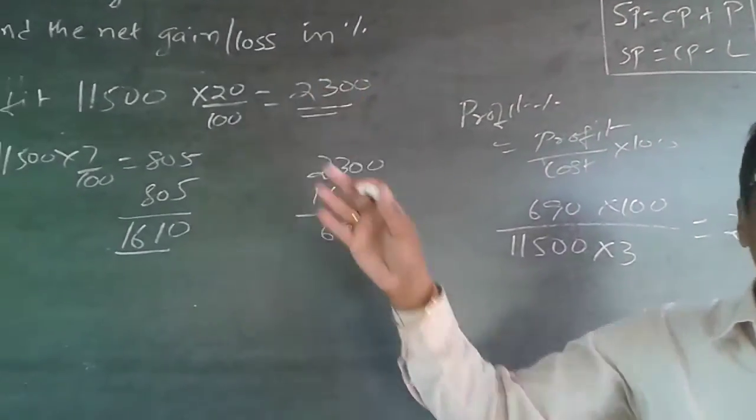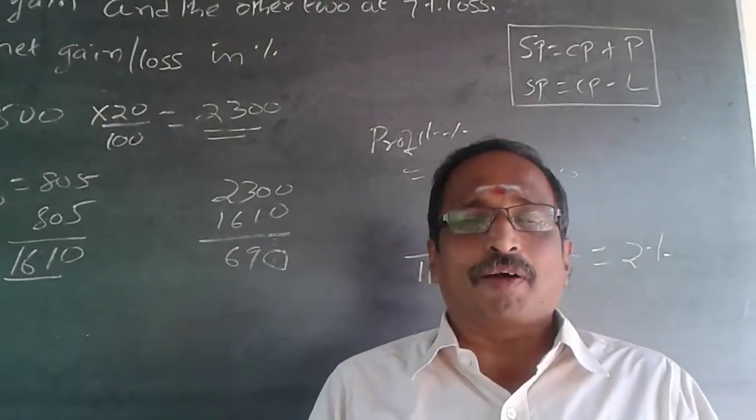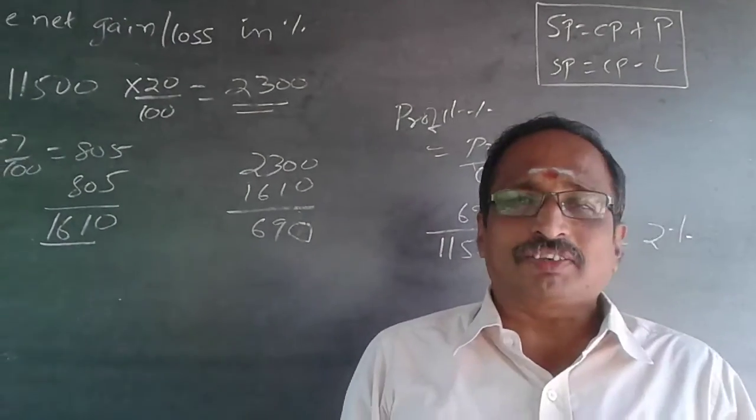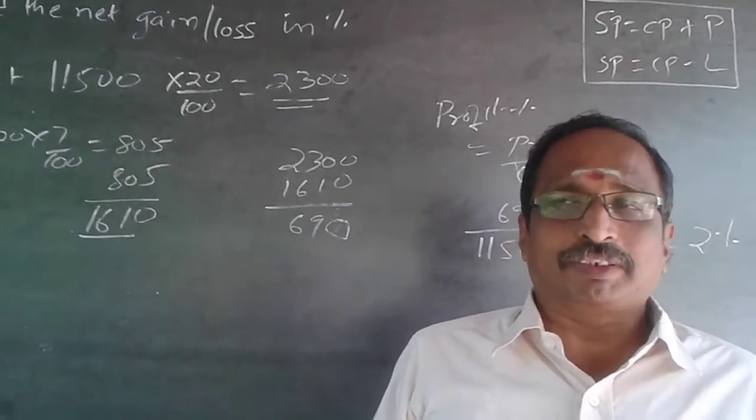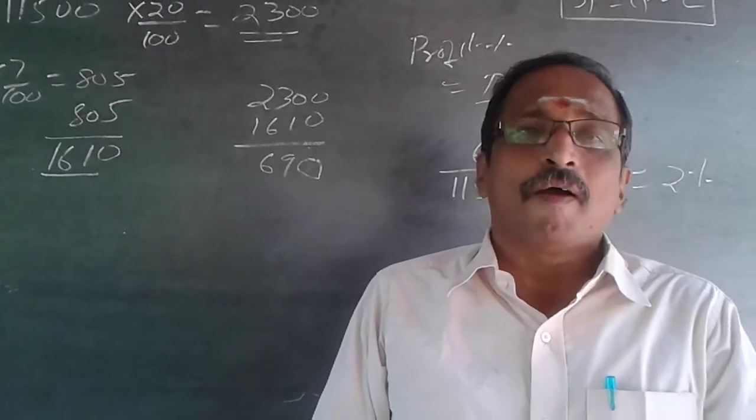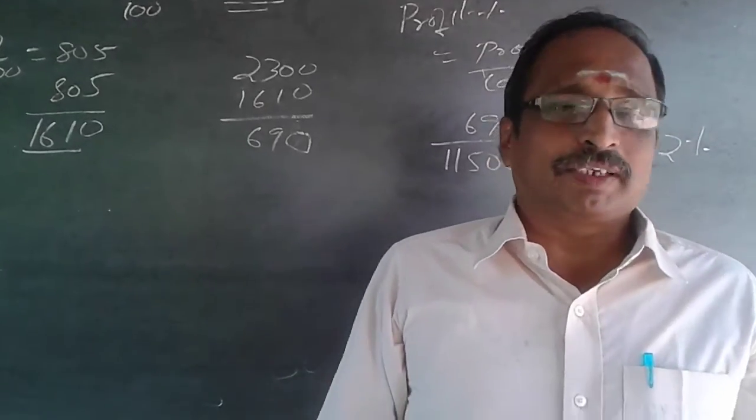The answer there in the question itself. On one TV is going to make a profit of 20%. On the other two TVs is going to make a loss of 7%. So, 7 plus 7 is 14. 20 minus 14 is 6% on all the three TVs put together. Per TV will be 2%. As simple as this.